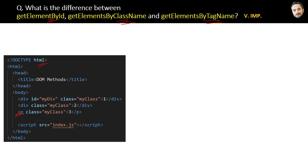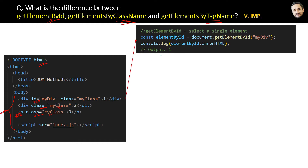some are elements with IDs like this, and some are with classes like 'myClass'. Now in order to access these elements we have three selector methods. The first is getElementById — it is used to select a single element by ID.